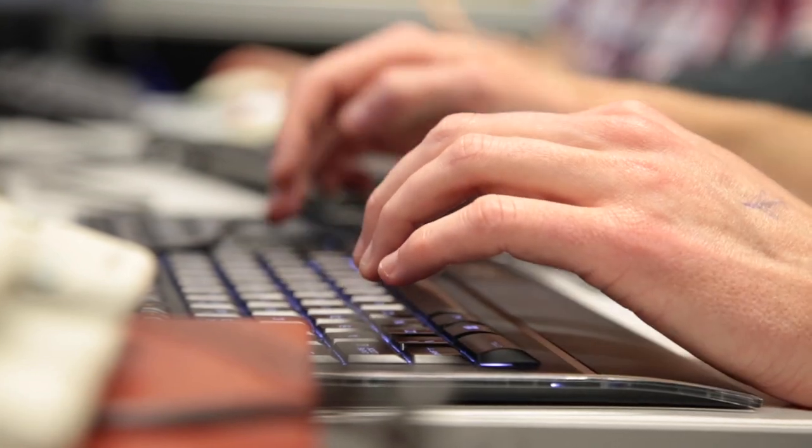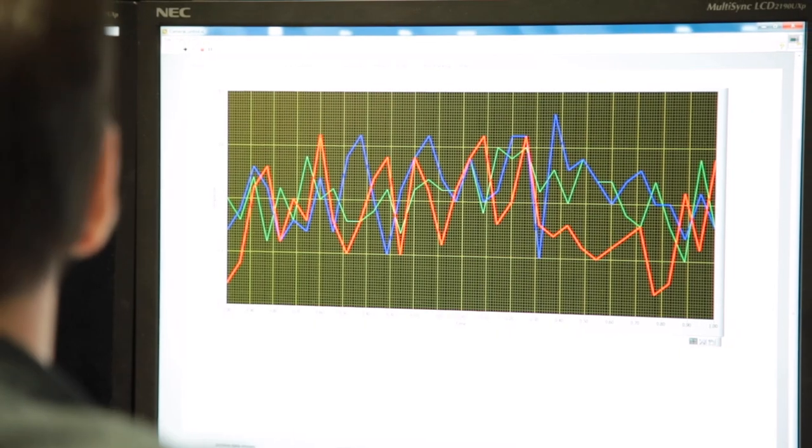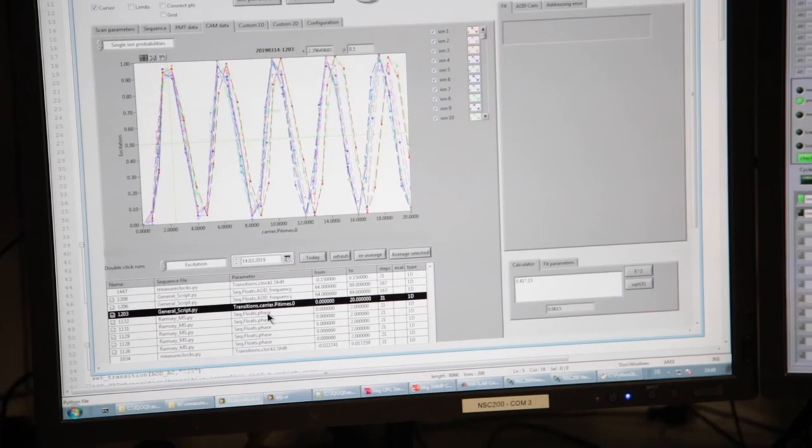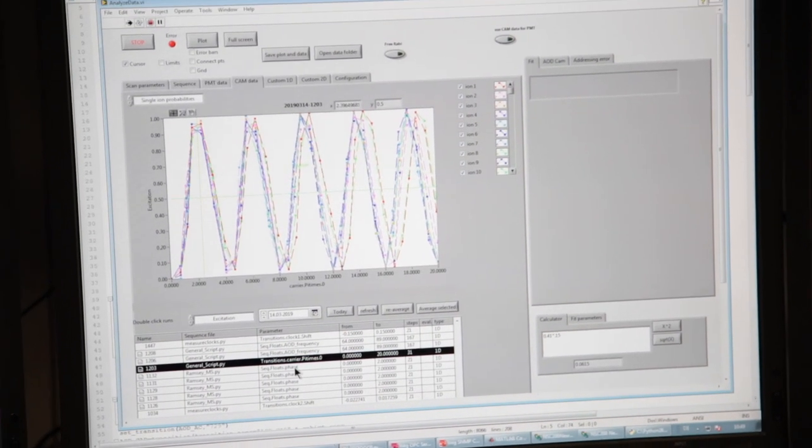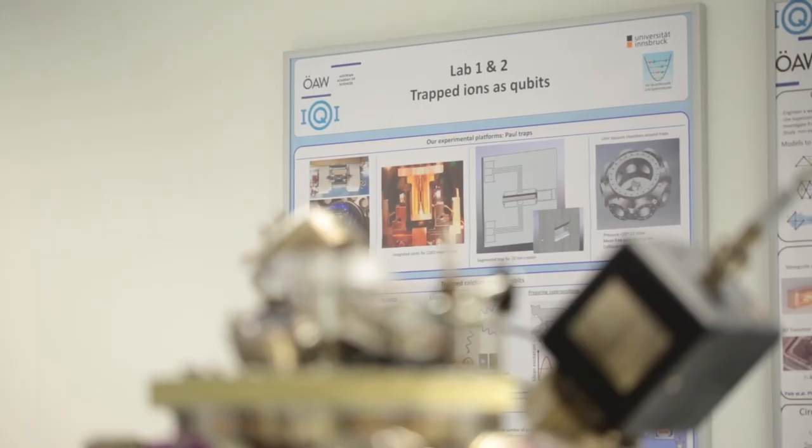And it is this self-verification that the Innsbruck researchers have succeeded in doing for the first time. The problem with the quantum system is also that they are very fragile. You have to isolate them very well from the environment. Any little disturbance can destroy your computation that you are doing. It is a very sensitive device.